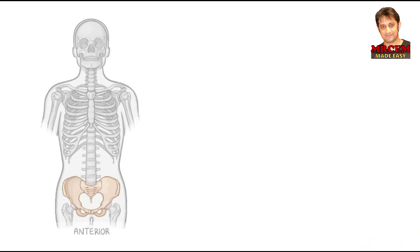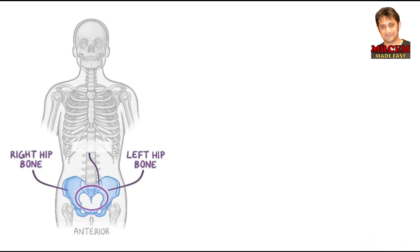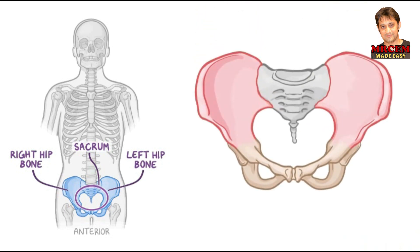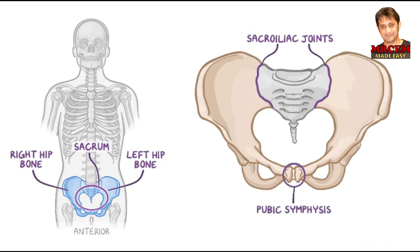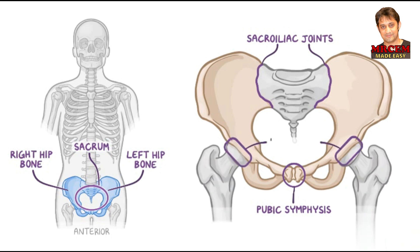The pelvic girdle is a bony ring known as the pelvic ring, consisting of the right and left hip bones and the sacrum, which is common to both the pelvic girdle and the axial skeleton. Each hip bone consists of the ilium, ischium, and pubic bone, and has three articulations. Posteromedially, it articulates with the sacrum at the sacroiliac joint. Anteromedially, it articulates with the other hip bone at the pubic symphysis. And finally, it articulates with the head of the femur to form the hip joint.